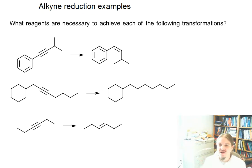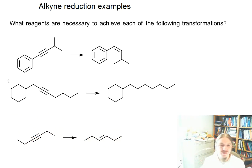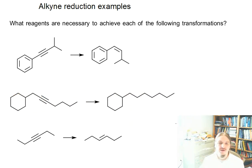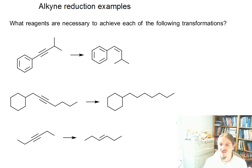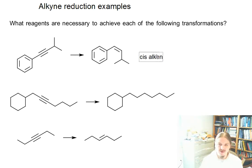So on this screen, I have three different alkyne reduction reactions. They're a little bunched together, so let me separate them out here a little bit. What I wanted to do is just go through each of them and think about what reagents are necessary to achieve these transformations. One way that you can approach each of these is just to go through the problems and write down what the product looks like.